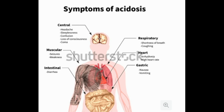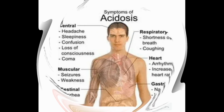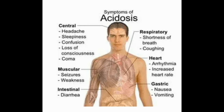Called ketoacidosis, confusion, jaundice — yellowing of the skin or the whites of the eyes — trouble breathing, or shallow rapid breathing. If you know or suspect that you have lactic acidosis and have any of these symptoms, call 911 or go to an emergency room right away.